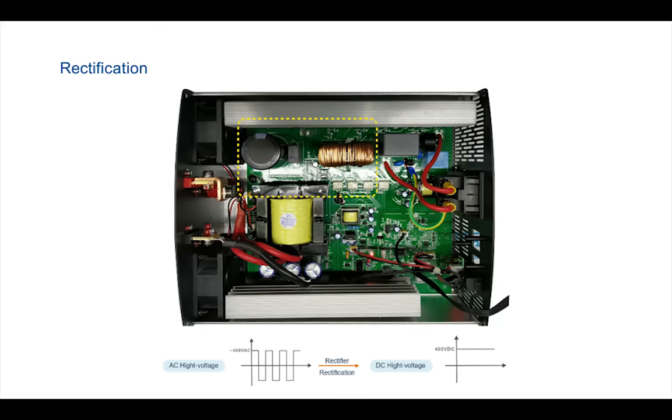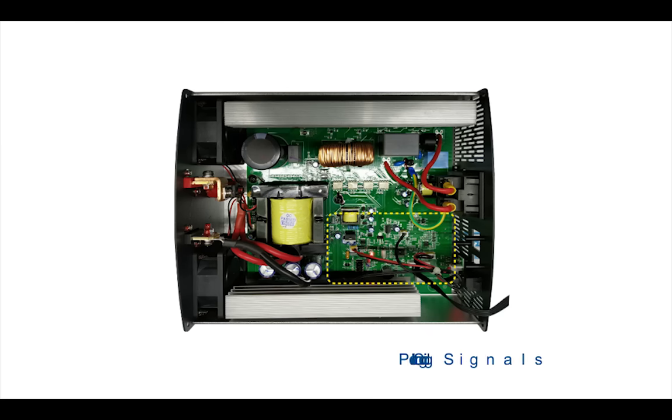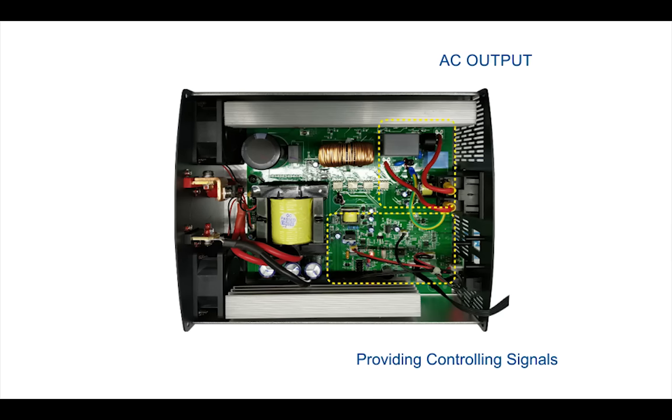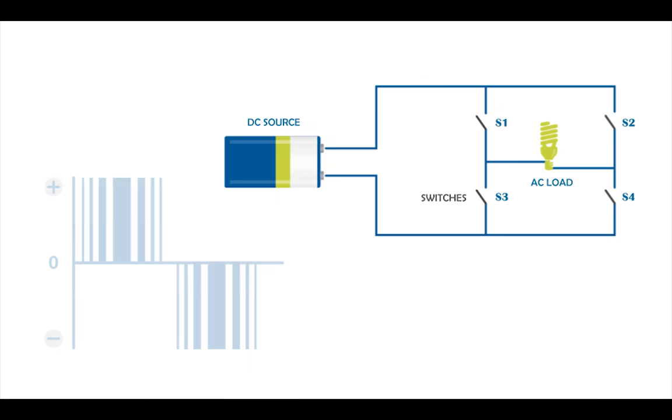At part two, there is the high voltage rectifier, and it is for boosting the voltage and preparing it for pulse width modulation. Part three and part four provide the control signals and prepare the pure AC output. This is provided by sine pulse width modulation.